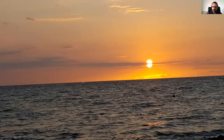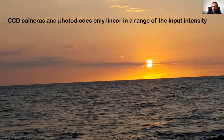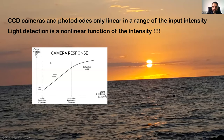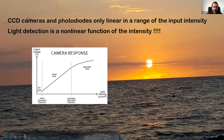What is nonlinear detection? Looking at an image, you see regions where different points have the same intensity — the detector is saturated. CCD cameras and photodiodes are linear in intensity only within a certain range; in general any light detection is a nonlinear function of intensity. We have a linear region but always a saturation region. This is perfect for doing neural networks — we already have in our lab the device providing the non-polynomial nonlinearity we need. We can just use a camera, nothing more.